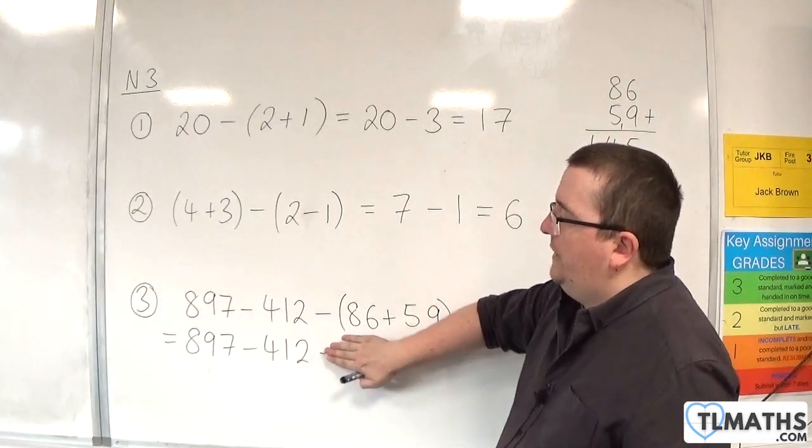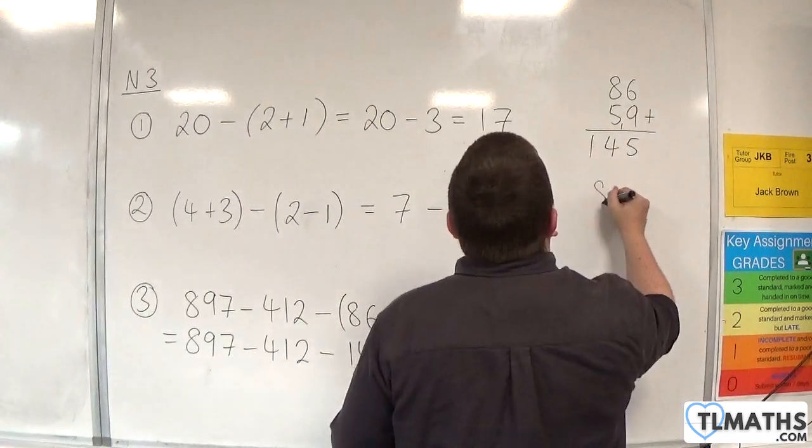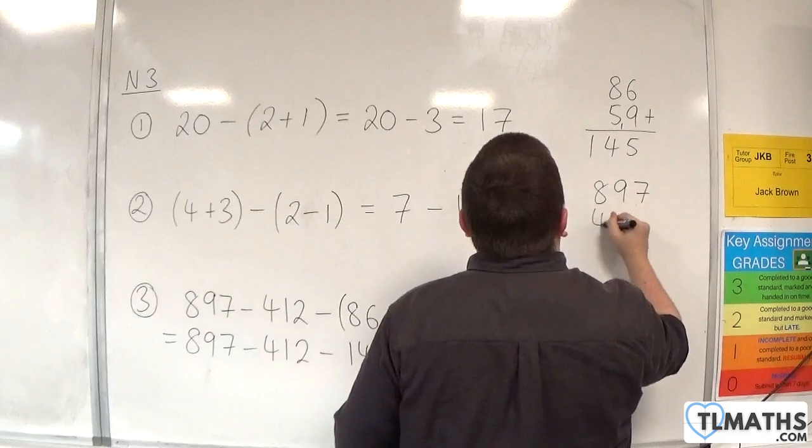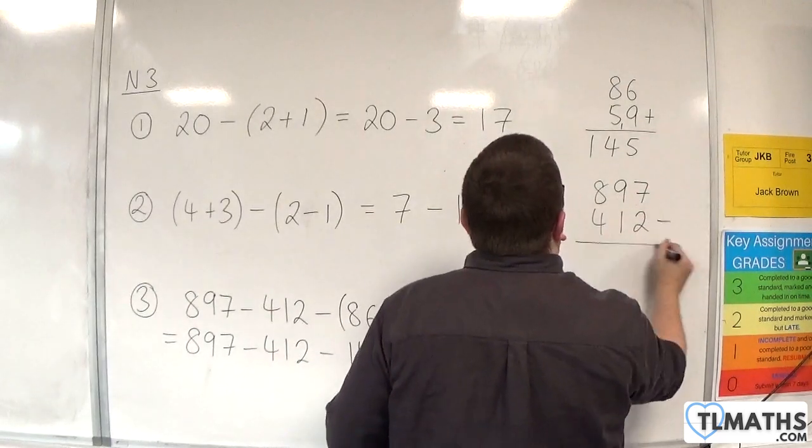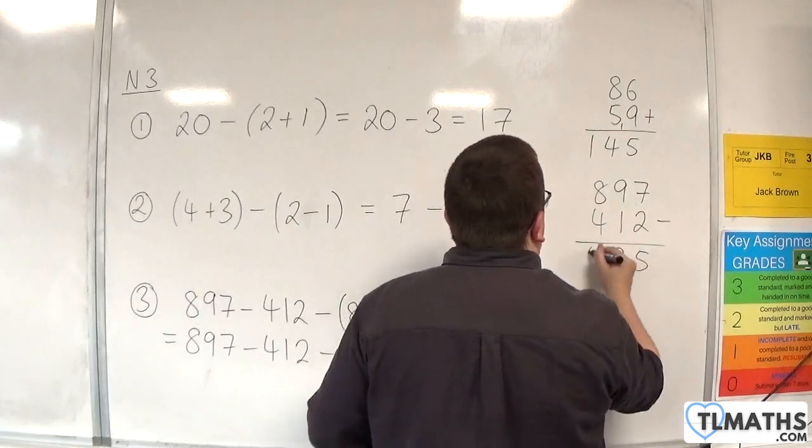The first calculation I need to do is 897 take away 412. 7 take away 2 is 5, 9 take away 1 is 8, 8 take away 4 is 4.